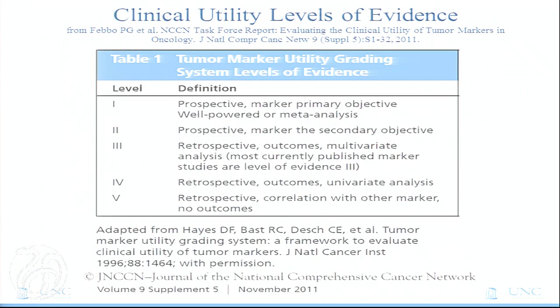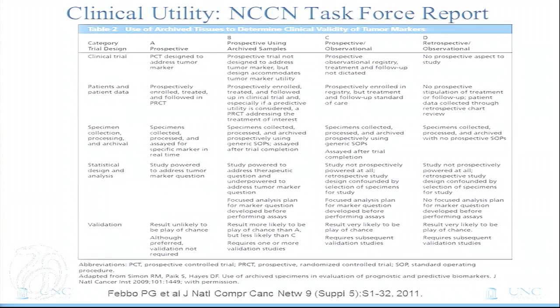To review the clinical utility levels of evidence developed so far: nearly 20 years ago, an ASCO panel convened and published recommendations for levels of evidence for tumor markers — the TMUG tumor marker utility grading system — with levels ranging from the highest level, prospective with the marker as the primary analysis, down to retrospective types of studies. Subsequently, some of the same authors published a paper discussing that this was perhaps too simplistic, and that we also had to consider the samples being used to create this evidence, not just the trials themselves. So we had levels of evidence relating to how samples are obtained and how tests are performed in relationship to the patient population.